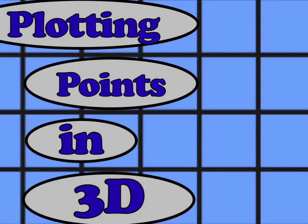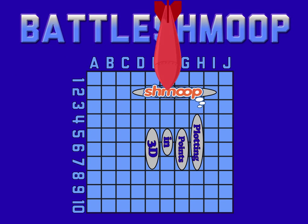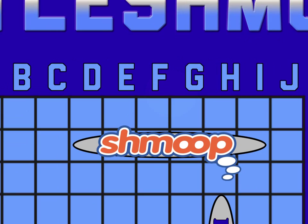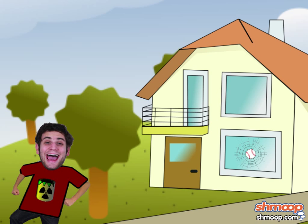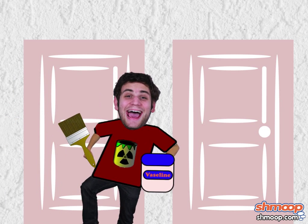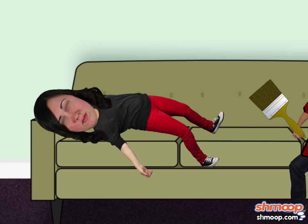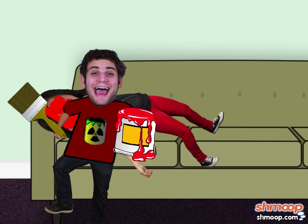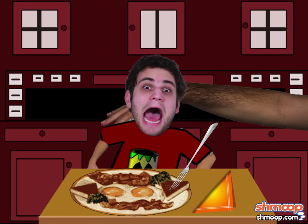Plotting Points in 3D, a la Shmoop. George has been a naughty boy — putting petroleum jelly on all the doorknobs of the house, painting his sister's face with red paint while she was asleep, and all before breakfast.